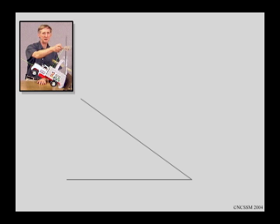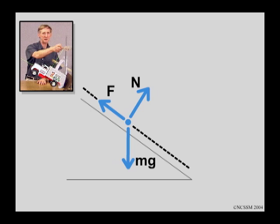We'll begin by representing the truck as a point. There are three forces acting on the truck: the weight mg acting vertically downward; the normal force n acting perpendicular to the plane and away from it; and the bumper force F acting parallel to the plane and upward along the plane. We set up an x-axis parallel to the plane with positive x pointing upward along the plane, and a y-axis perpendicular to the plane with positive y pointing away from the plane.